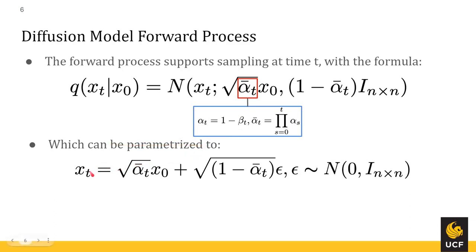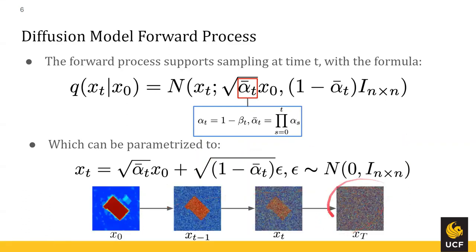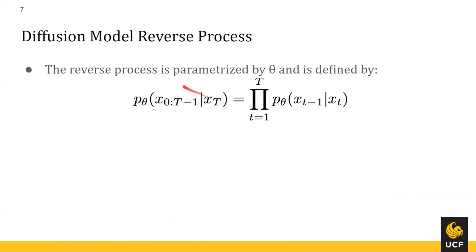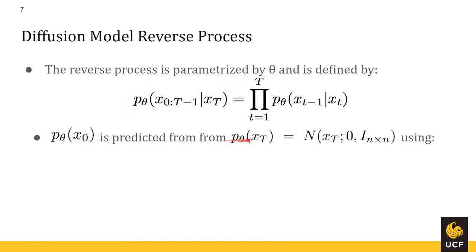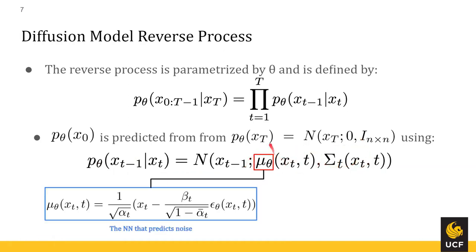We can parameterize this to a simpler equation where X_T given X0 is defined with epsilon as our normal distribution of noise. In this process, we actually start with a segmentation map and noise that up to the normal distribution, whereas previously we started with an input image like a face. For the reverse process, parameterized by theta, it's defined by a Markov chain where P_theta of X0 is predicted from P_theta of X_T, which is the normal noise. Given X_T, we can get X_{T-1} with the predicted mean and variance, where the mean will be predicted with a neural network.